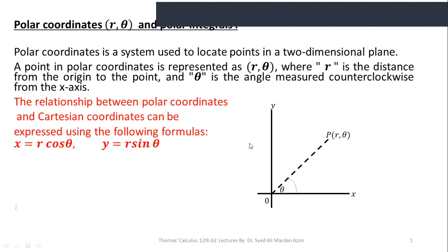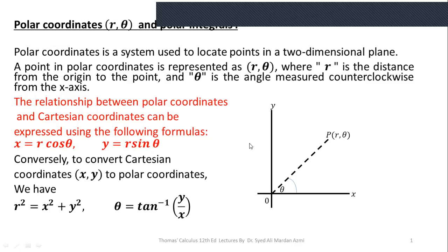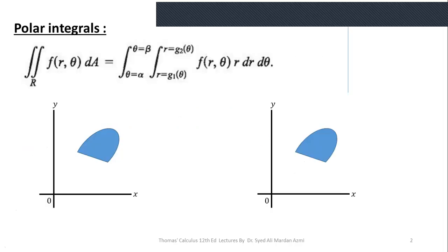Conversely, the relationship between Cartesian and polar coordinates is: r² = x² + y², and θ = tan⁻¹(y/x). In the next step we will learn a generic formula for polar coordinates.